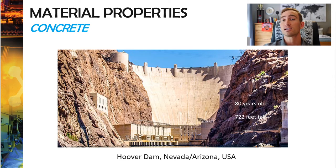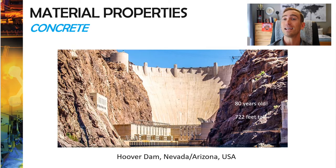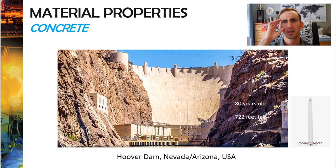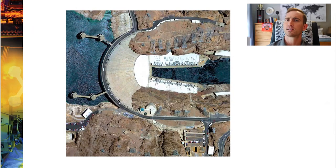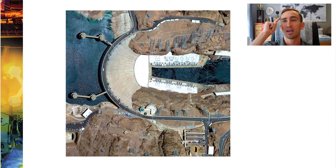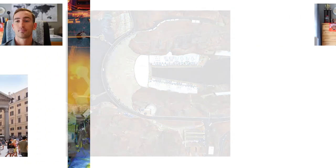Take a look at the geometry of this bridge and keep that in mind as we go to the next structures built out of concrete. Another very impressive structure built out of concrete is the Hoover Dam in Nevada and Arizona. It's 80-plus years old, stands 722 feet tall — taller than the Golden Gate Bridge and definitely taller than the Washington Monument. When you think about all the weight of water it's holding back, it's holding back enormous force. Think about the shape and geometry of a dam before we move to the next structure.